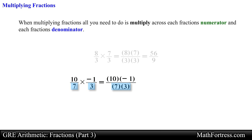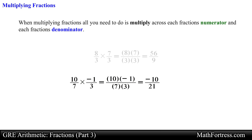Then it is just a matter of individually simplifying the numerator and denominator. Simplifying the numerical expressions we obtain the final answer equal to negative 10 over 21. Recall that we can also move the negative sign in front of the fraction, yielding the equivalent fraction negative 10 over 21. Notice that in this example the fraction is in simplest form — there is no need to reduce the fraction.